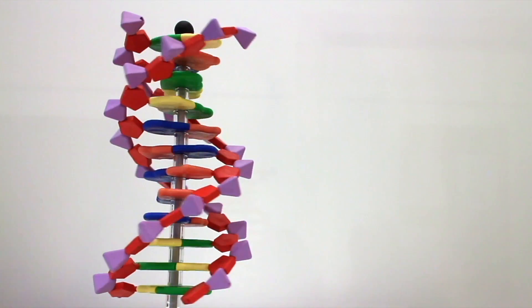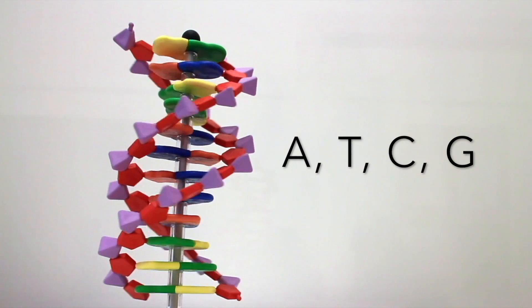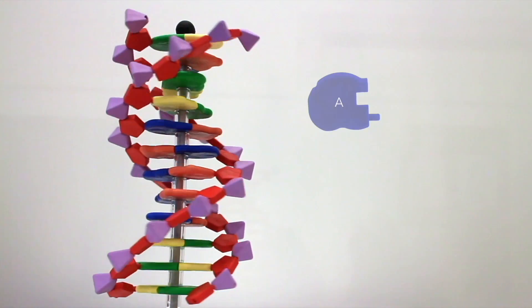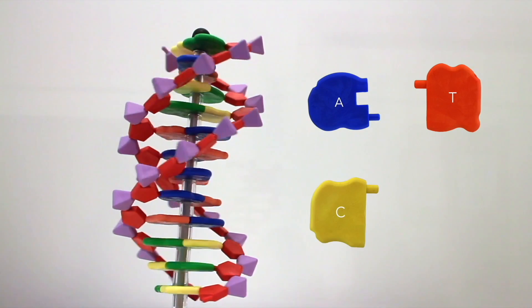There are four bases: A, T, C, and G, which form complementary pairs, A matching with T and C matching with G.